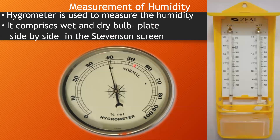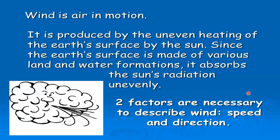The instrument used to measure humidity is the hygrometer. This hygrometer has wet and dry bulb plates placed side by side in a Stevenson screen.